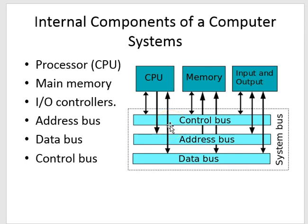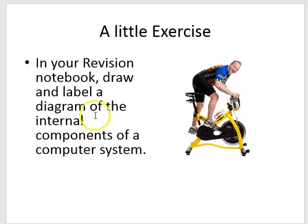So there we have it: the six components of a computer system—the processor, the main memory, the I/O controllers, the address bus, the data bus, and the control bus. That's the diagram you need. Pay attention particularly to the address bus, because notice that the address bus arrow goes in one way. I'm going to look at this in the next video, but this only goes one way, whereas the others are two-way.